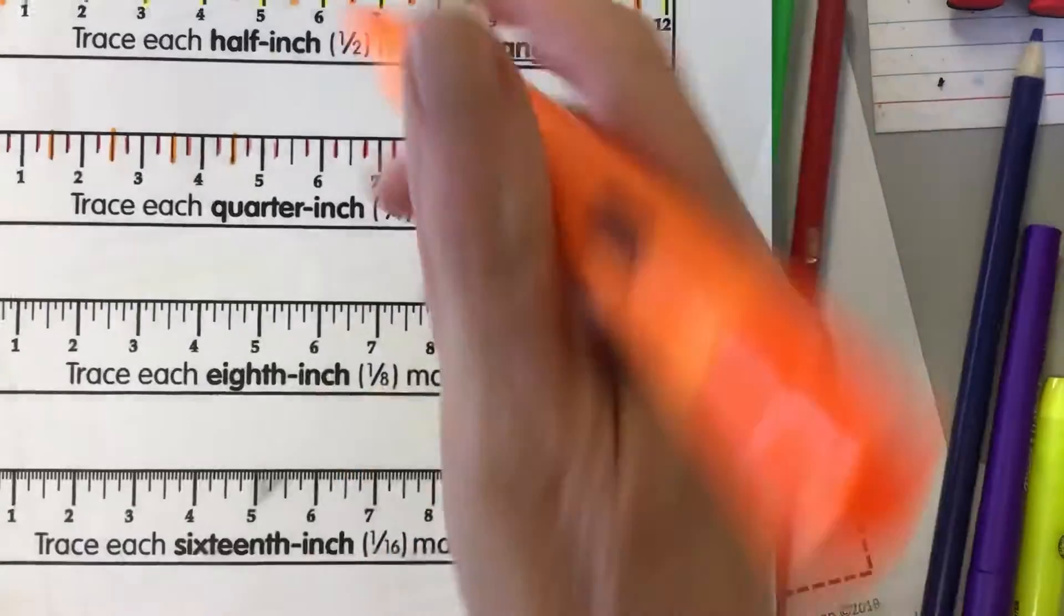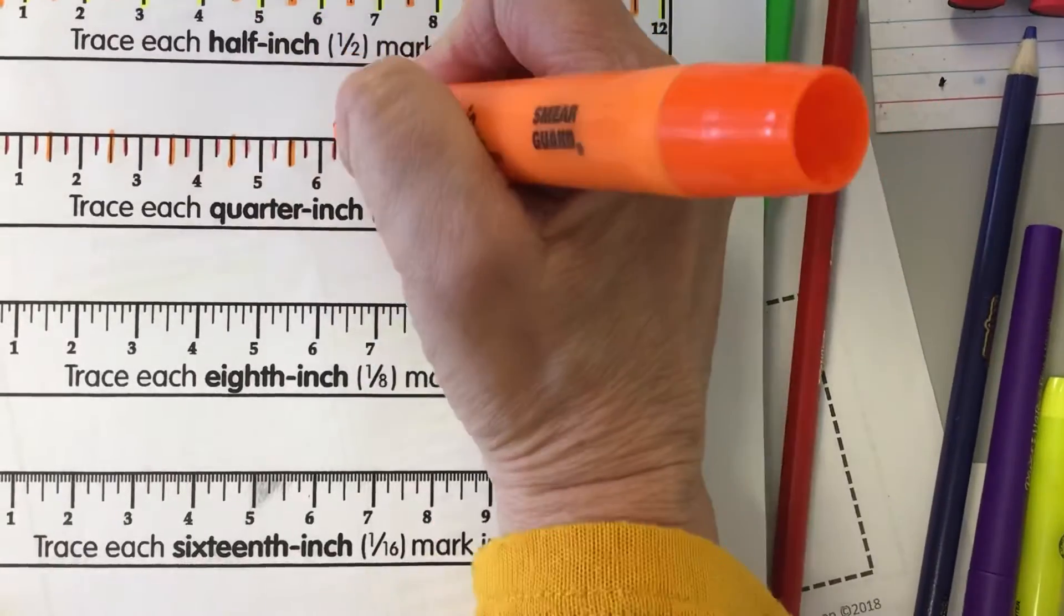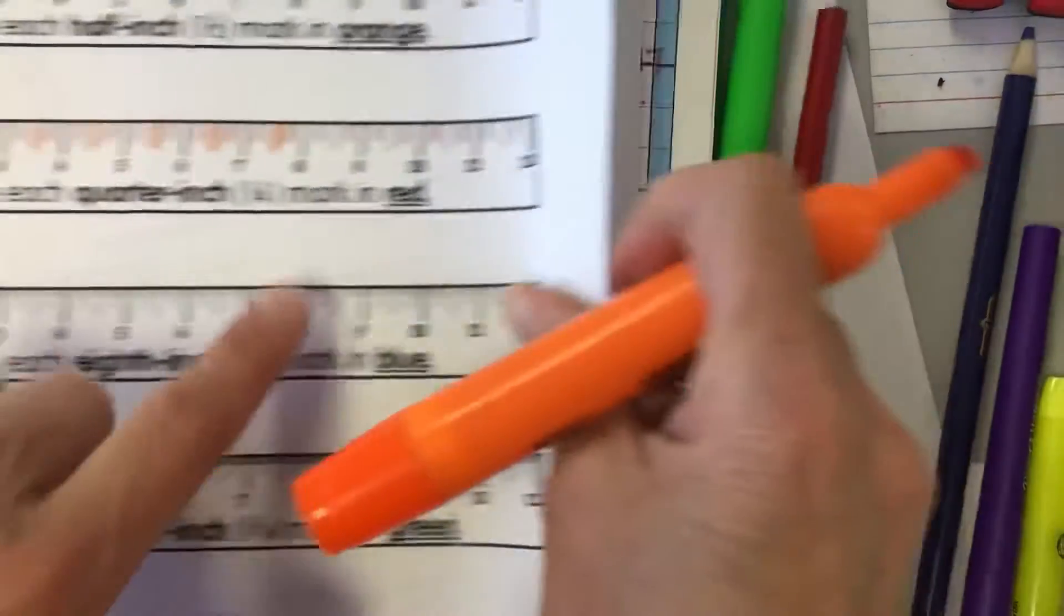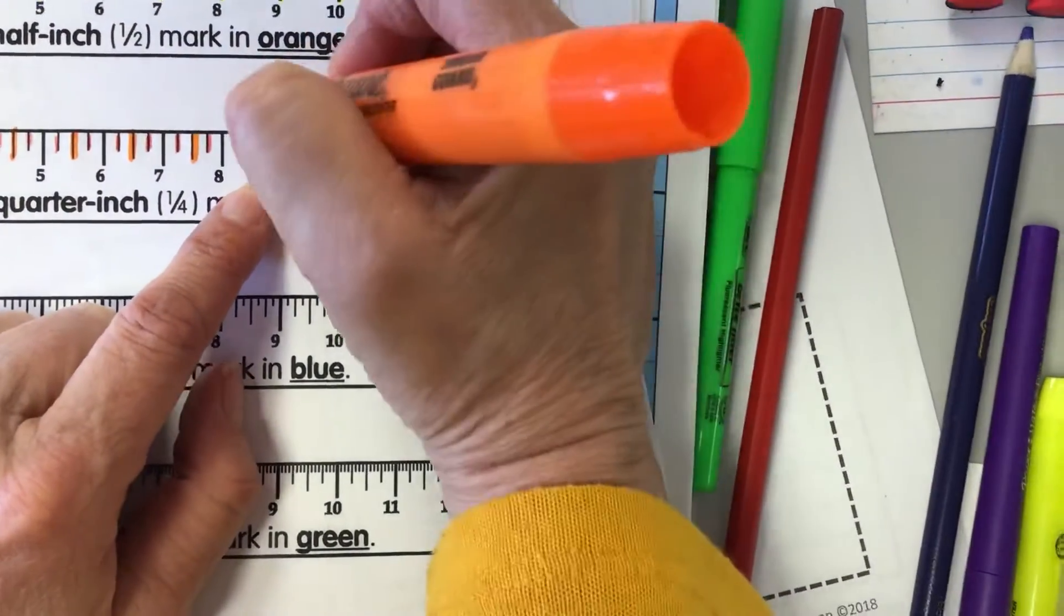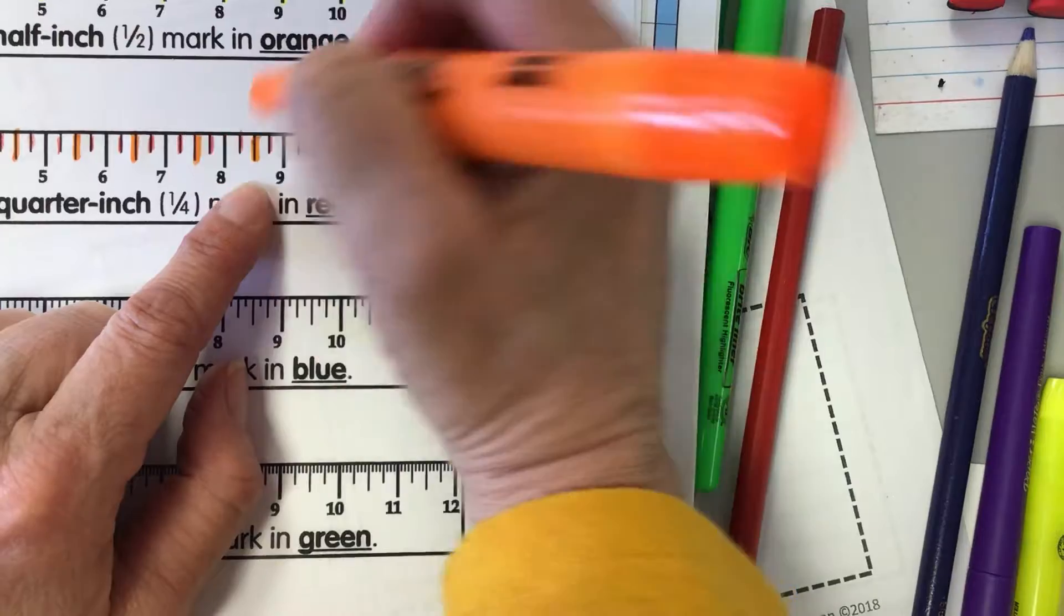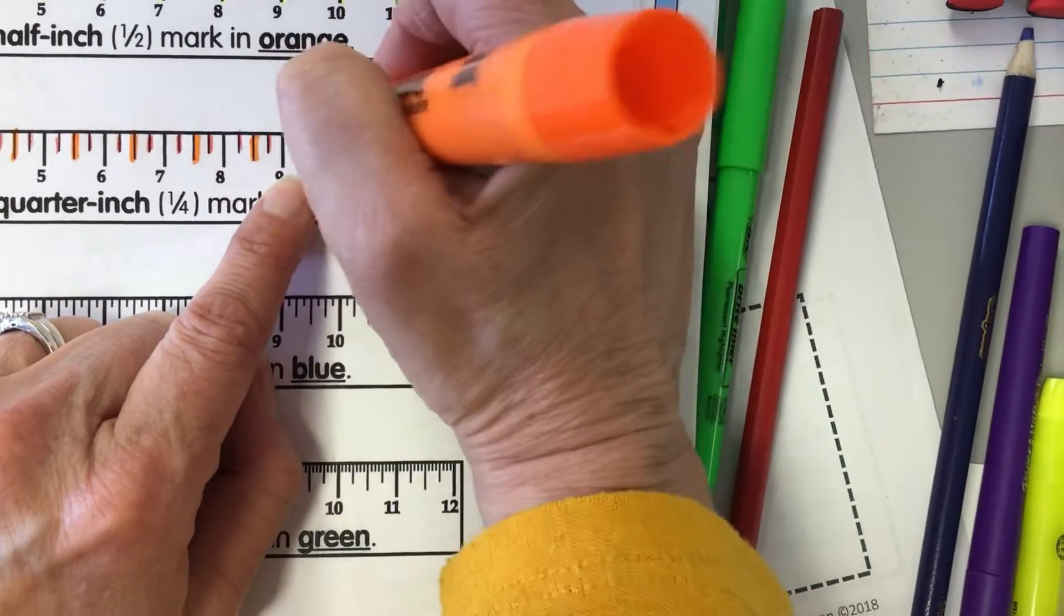Yes sir. A half is more significant than a fourth. Well, it's greater than. I don't know if it's more significant because it depends on what you're measuring, if it matters if you have a really tight measurement or not.